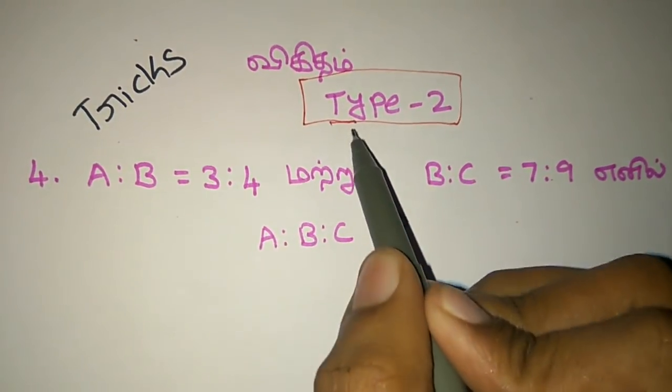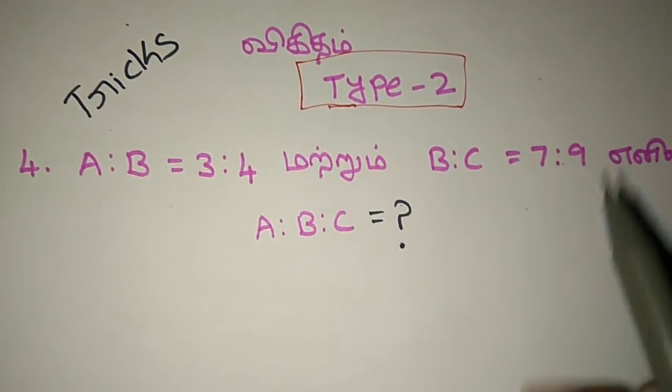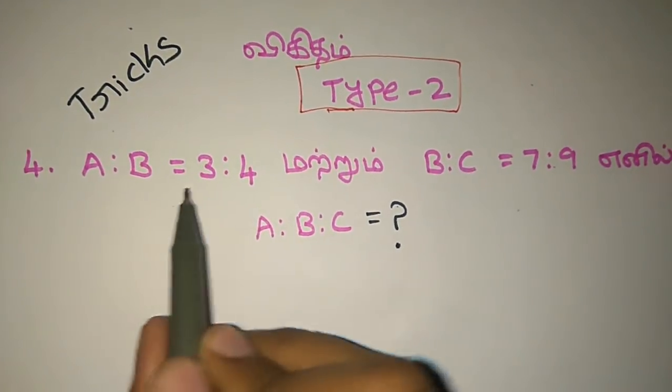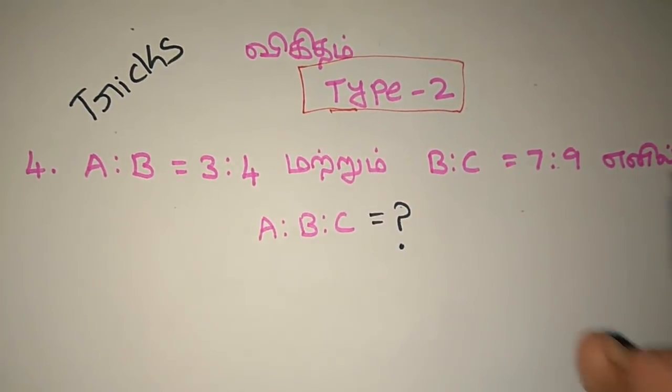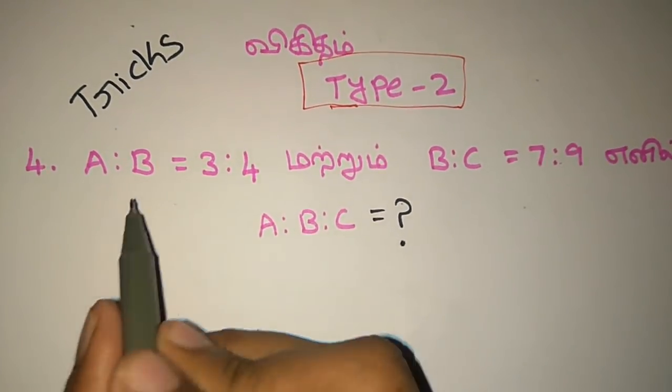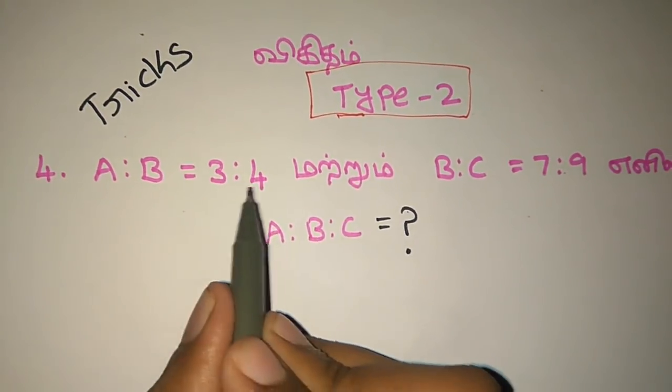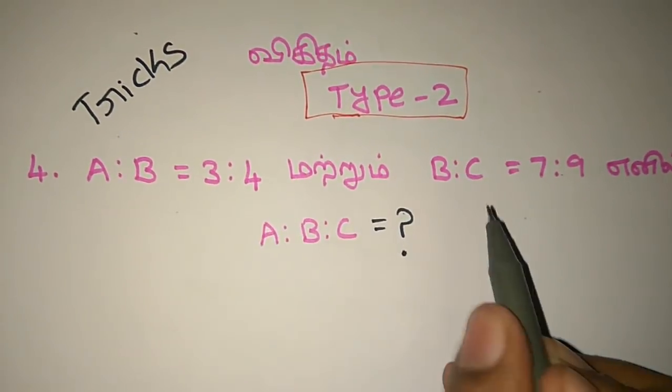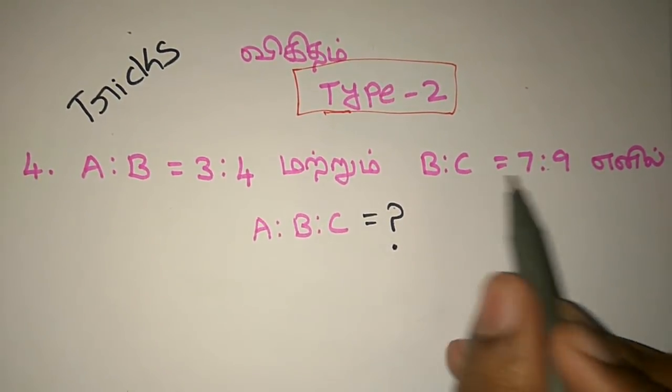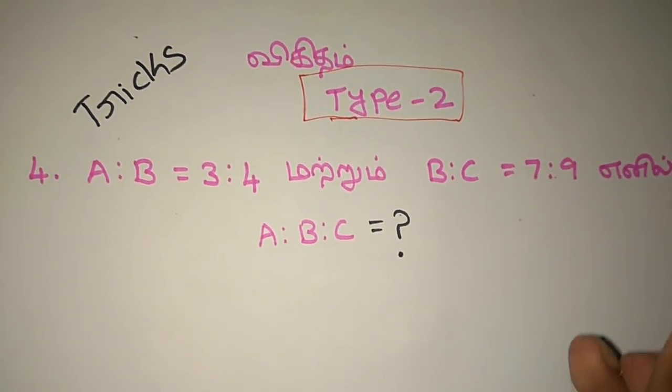So, how do we solve the percentage? That is, A to B is 3 to 4. That is, B to C is 7 to 1.